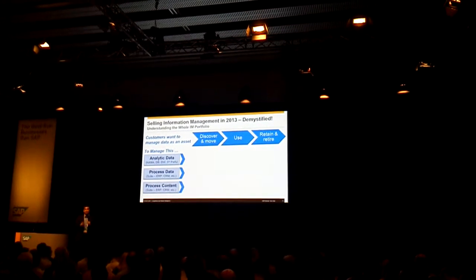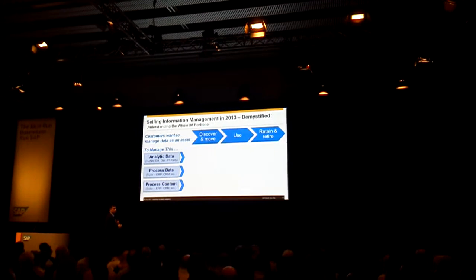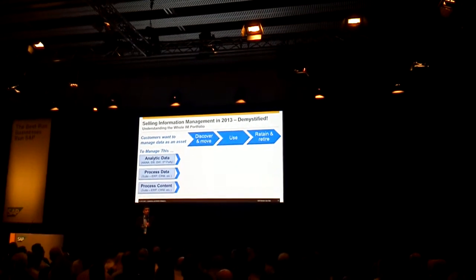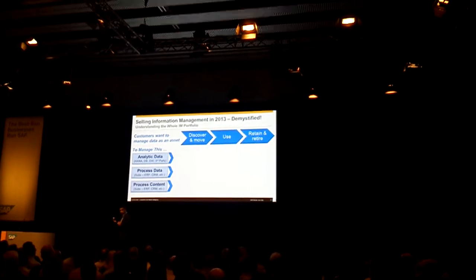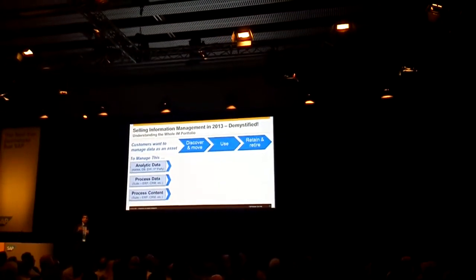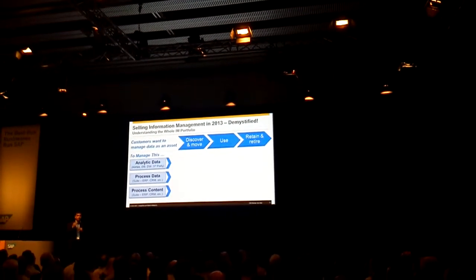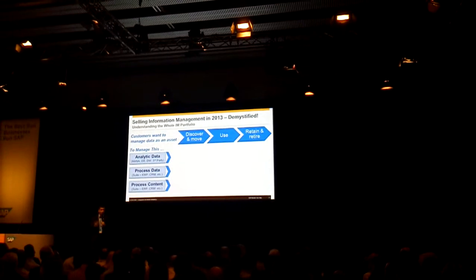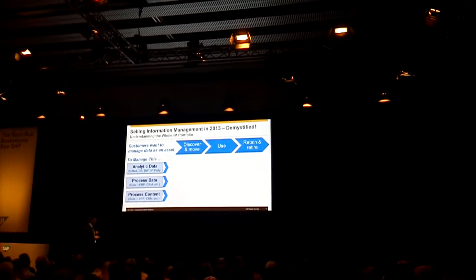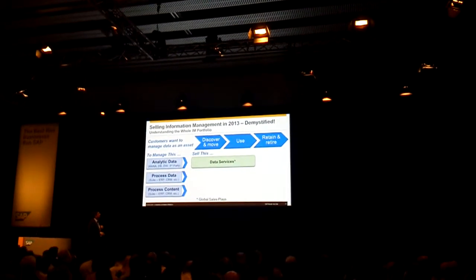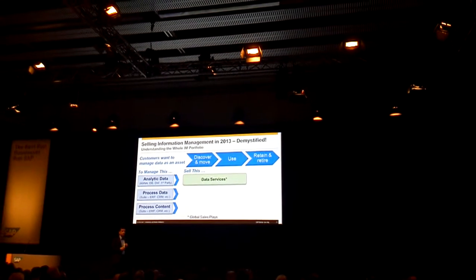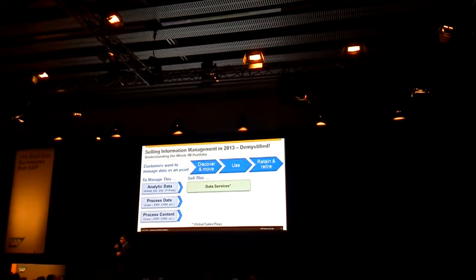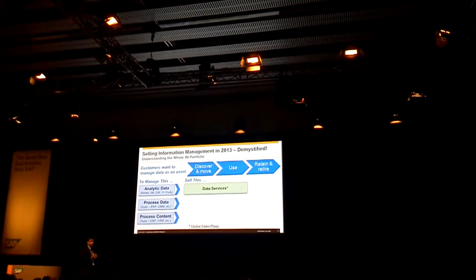These three categories tell you what to go after. When looking at EIM and analytic data, the only thing you need to remember is data services — you don't have to remember individual products. It's the whole bunch. You don't have to remember data integration, data quality, all those different acronyms. You just have to know about data services. When going after process data, lead with enterprise master data management, because typically that's where the opportunities are. For process content, this is where the OpenText solutions come in.